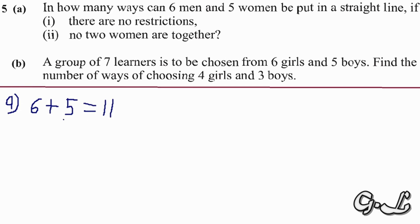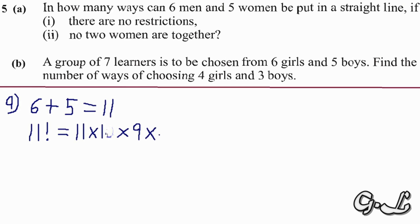Now with that eleven, you have to say eleven factorial. This is the approach when you are told there are no restrictions. So eleven factorial means 11 × 10 × 9 × 8 × 7 × 6 × 5 × 4 × 3 × 2 × 1. If you're allowed to use your calculator, you can just press eleven factorial and it will give you the answer.